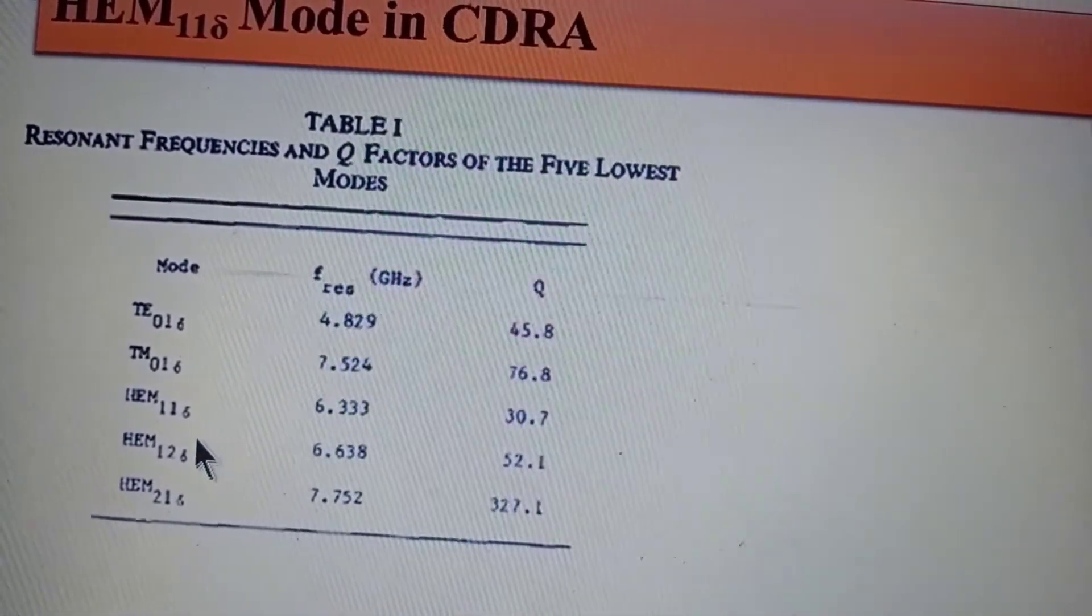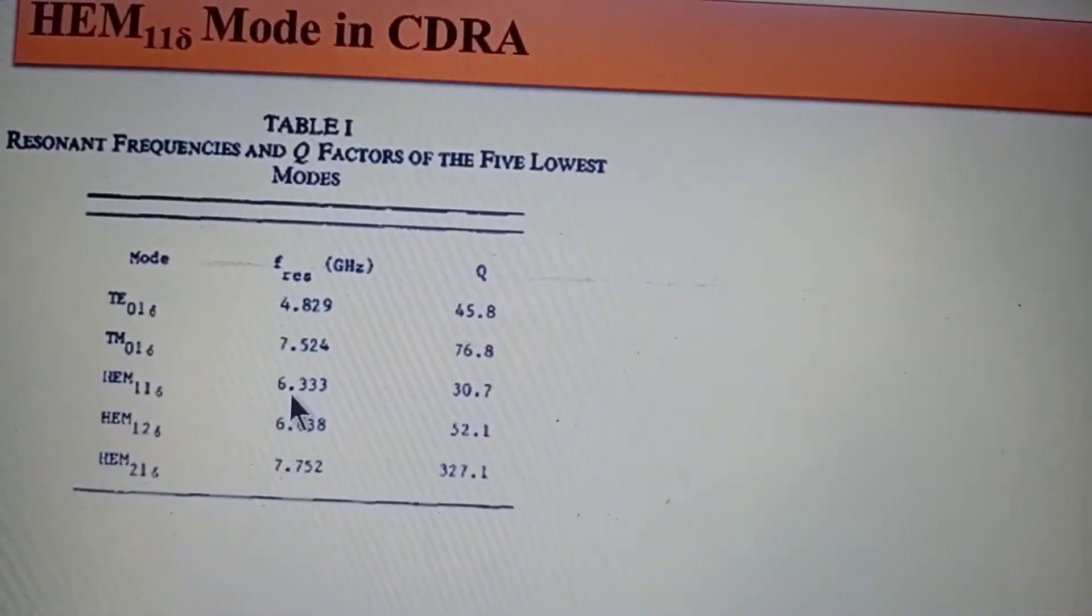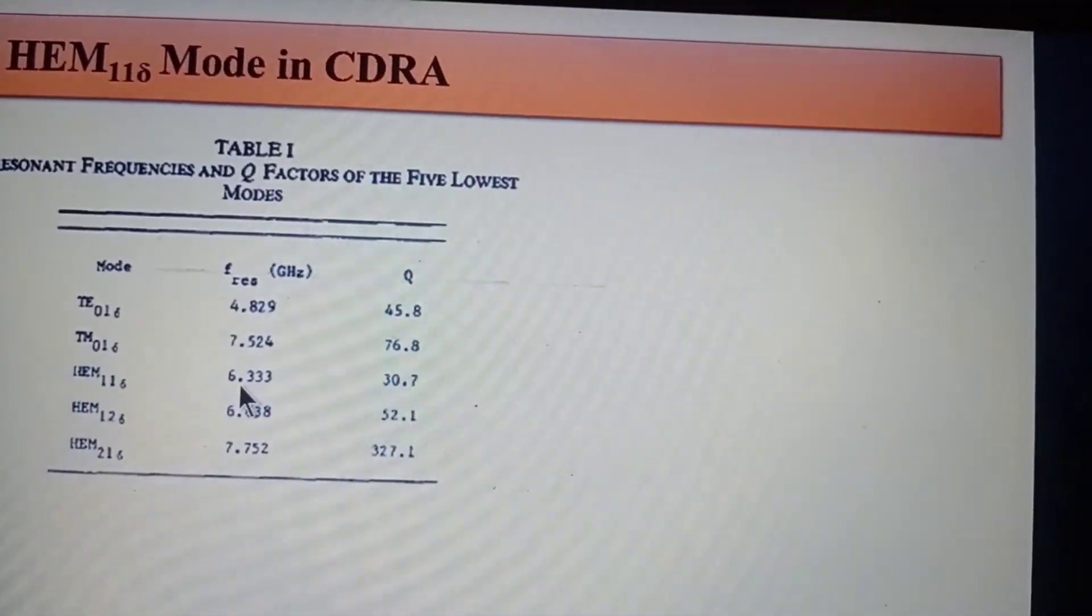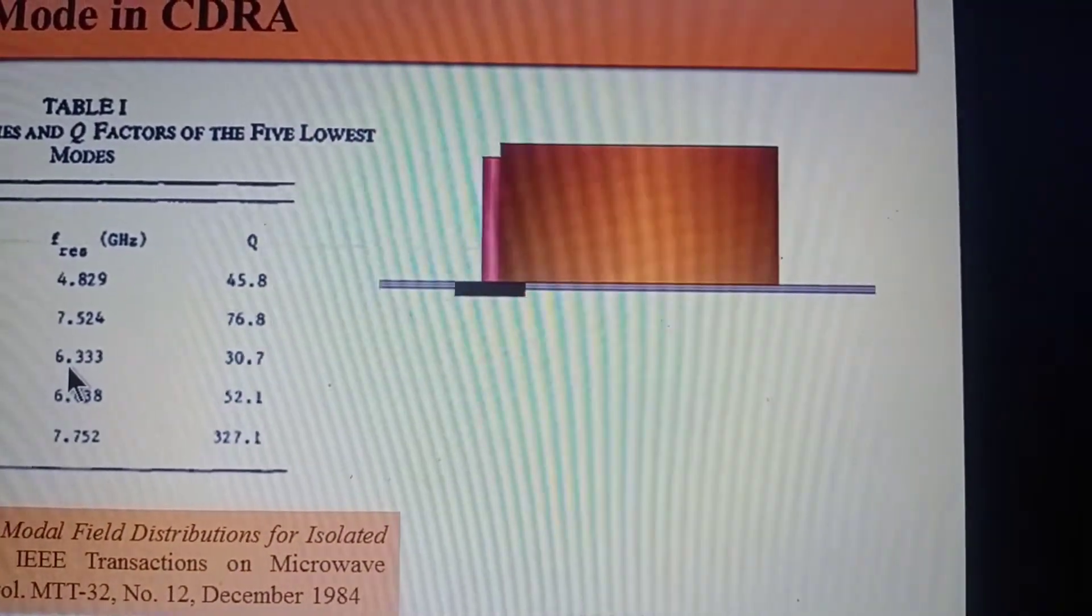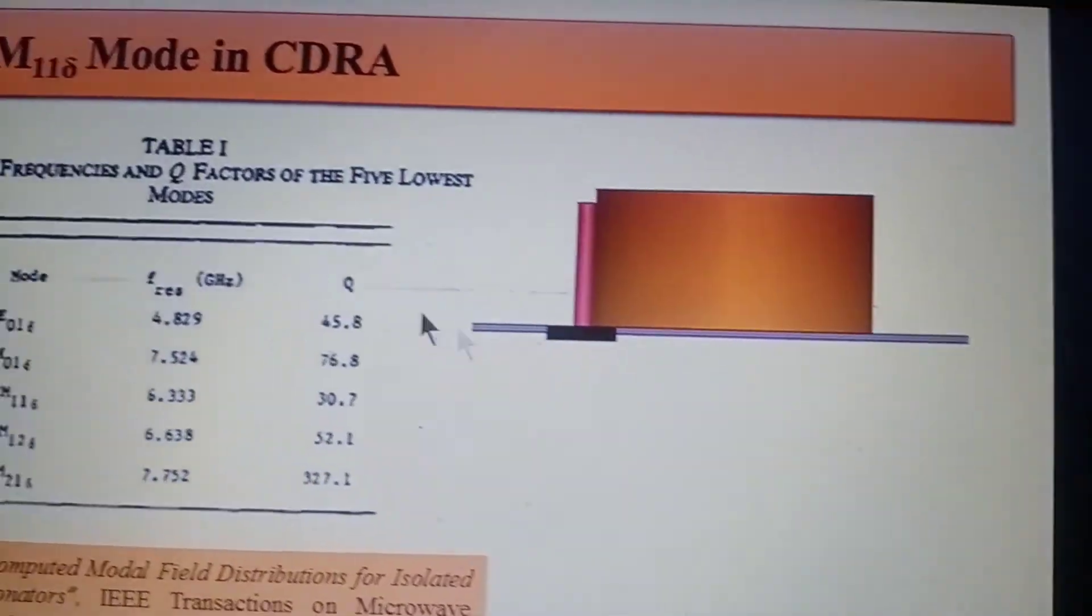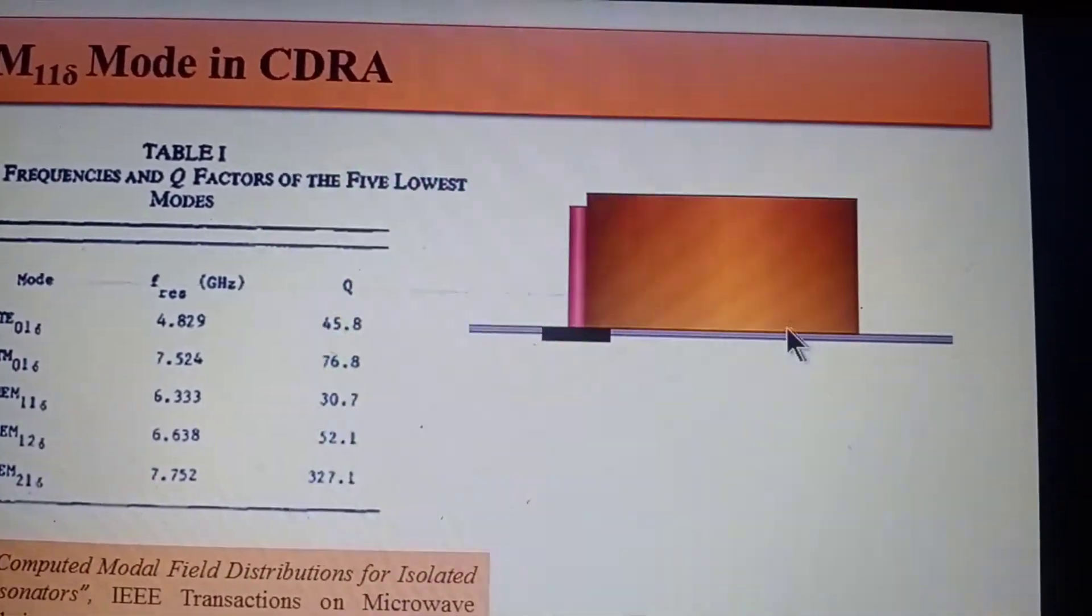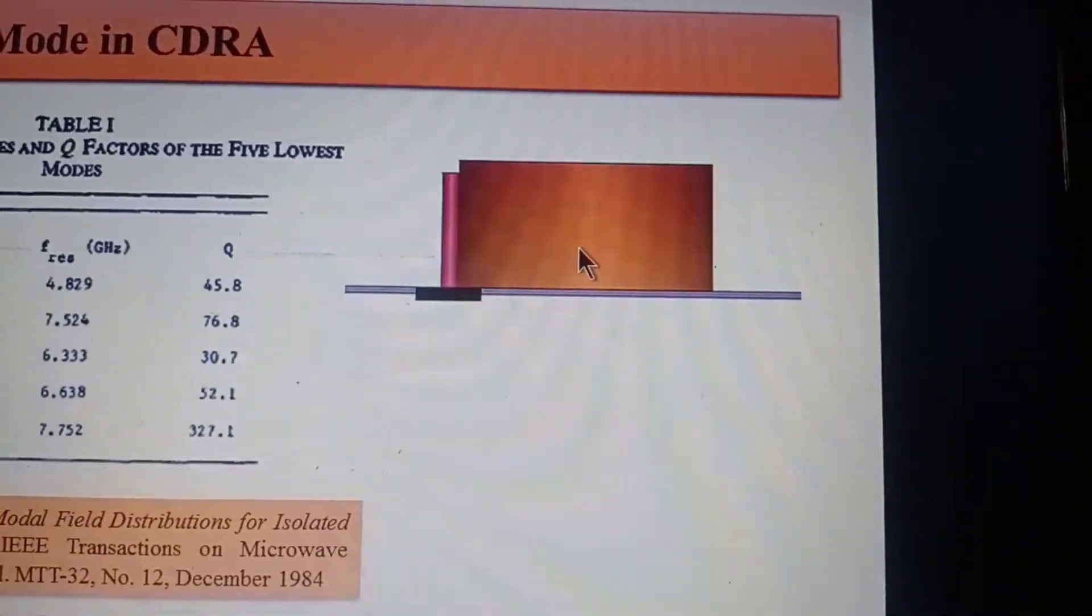They have excited some theoretical assumptions. Theoretically they have predicted the first few modes in the DRA can be excited at these frequencies. You can see just here HEM11 mode. As their explanation, for isolated DRA it is 6.33, but we tried to excite this mode by considering the coaxial probe fed at edge. In this isolated means they don't have ground plane and all, right? Here we have considered and we have excited this mode.